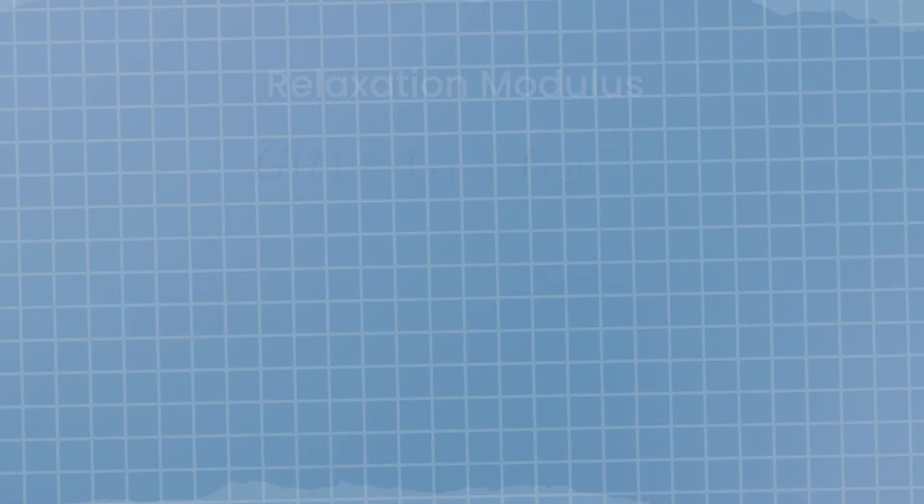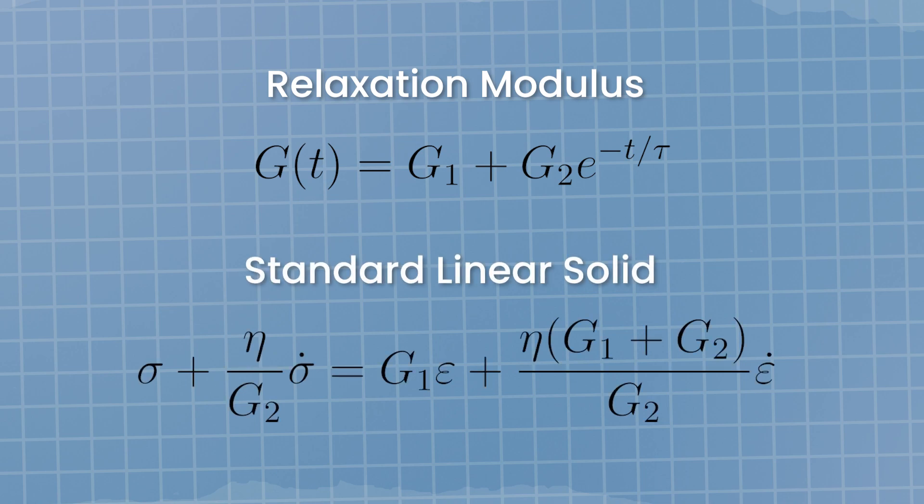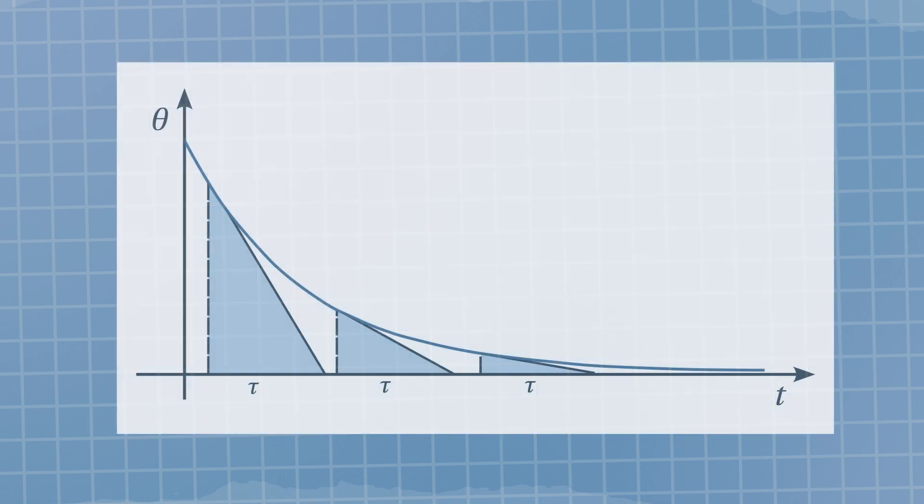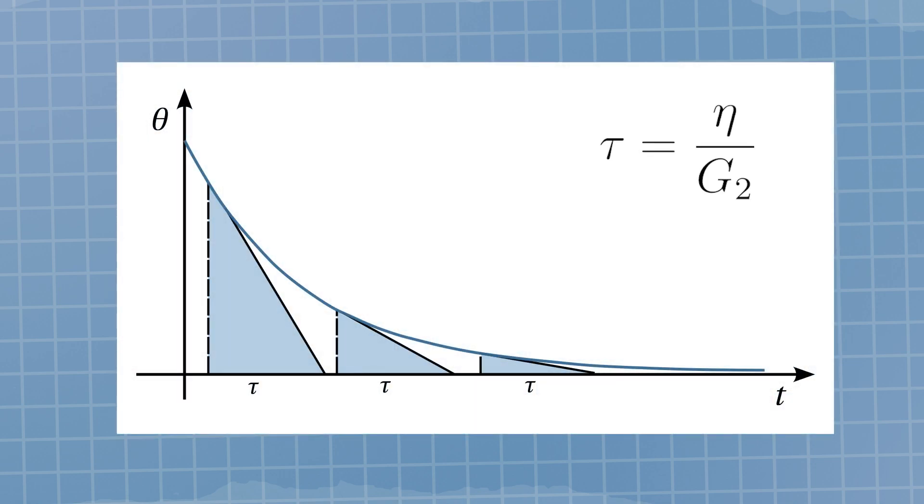One fair question to ask is the following: what relaxation modulus would give us the standard linear model? The answer is a negative exponential plus a constant. The constant with dimension of time in the exponential is the so-called relaxation time. It's the linear extrapolation for the fall-off in the stress response to a constant strain.